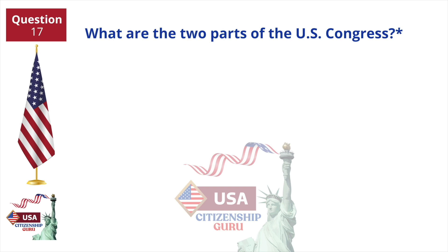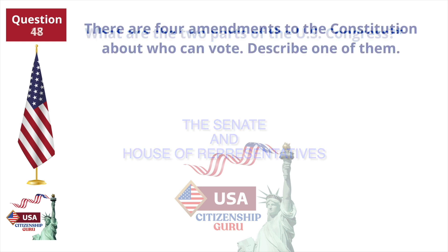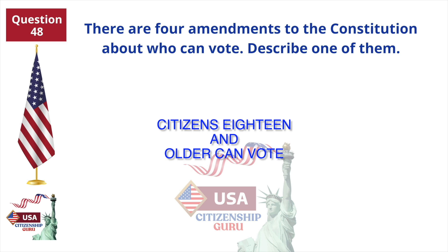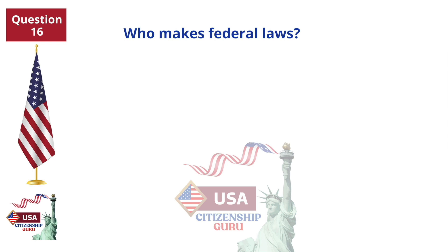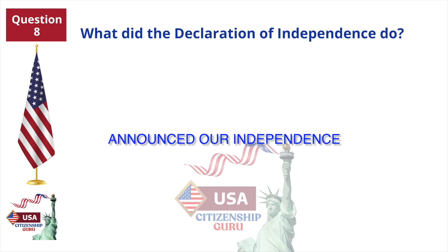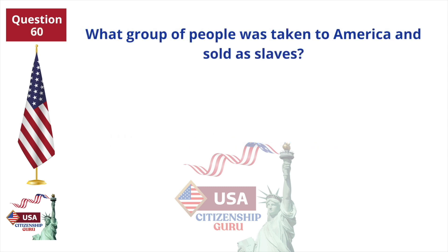What are the two parts of the U.S. Congress? There are four amendments to the Constitution about who can vote — describe one of them. Who makes federal laws? What did the Declaration of Independence do? What group of people was taken to America and sold as slaves?